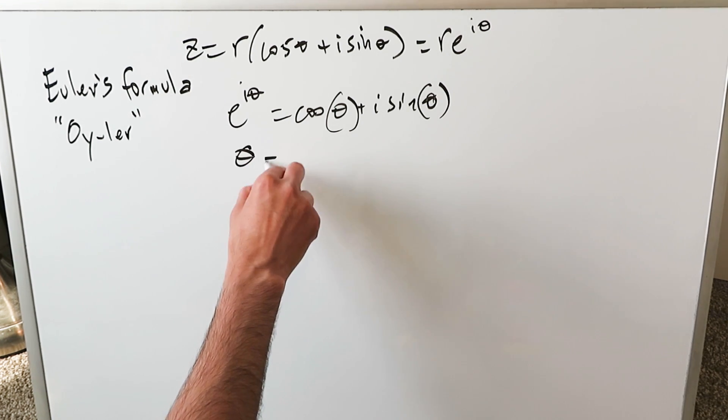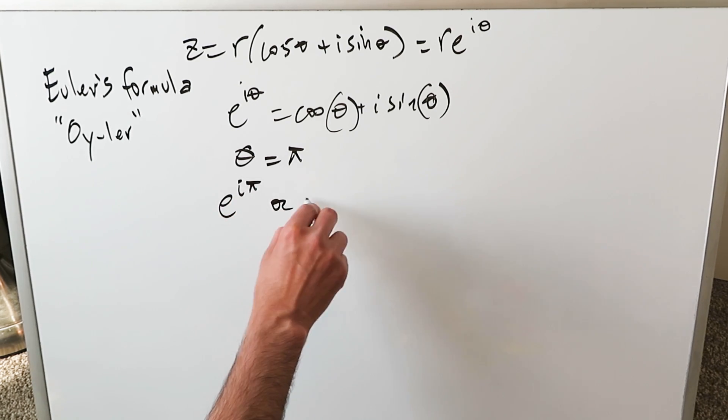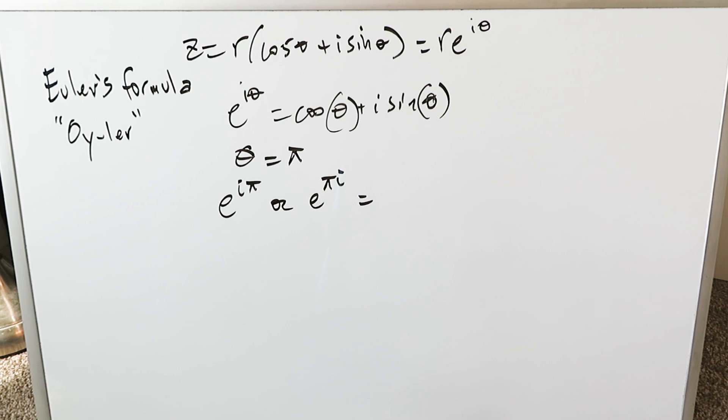If theta were to be represented in terms of pi, then you're looking here at E to the i pi, or you can say E to the pi i, is equal to... and you feed the value of pi into your theta.